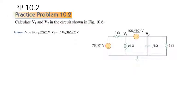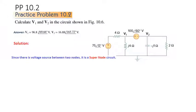This is v1 and this is v2, and the answer is also given, so we have to match our calculation with the answer. Now, the first thing we note is that since there is a voltage source between two nodes, it is a supernode. You can see that if there is a source between two nodes, then the circuit will be treated as a supernode.